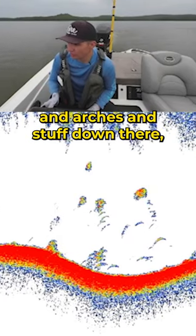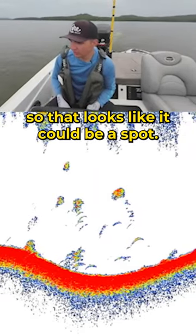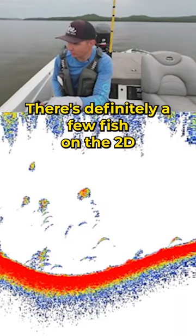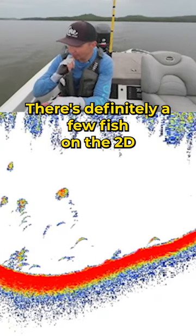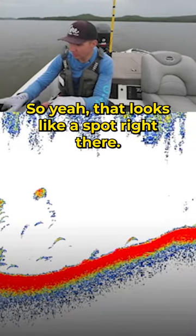There's some nice dots and arches and stuff down there. So that looks like it could be a spot. There's some bait stacked up. There's definitely a few fish on the 2D and on the down imaging. So yeah, that looks like a spot right there.